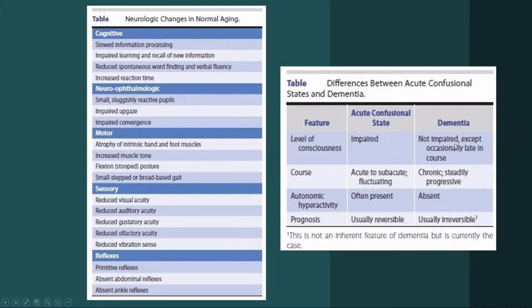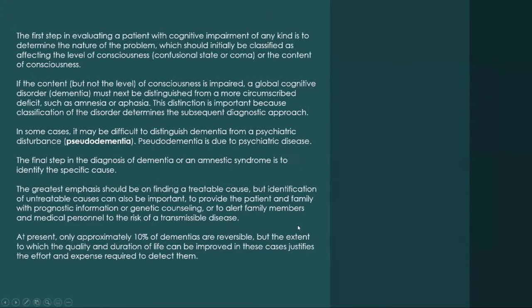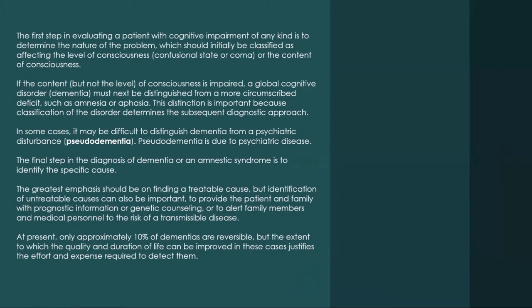The very first step when you encounter a patient referred for dementia is to determine the nature of the problem: is the patient having a problem with the level of consciousness or the content of consciousness? This is the key differentiation between delirium and dementia. If a patient presents with memory loss, determine whether it's secondary to delirium or dementia. Once you identify the nature, you can identify the cause and see if the problem can be reversed.